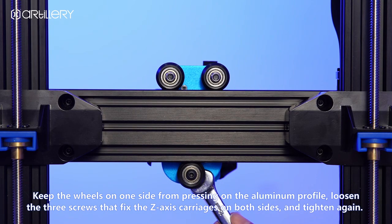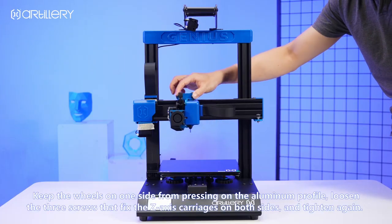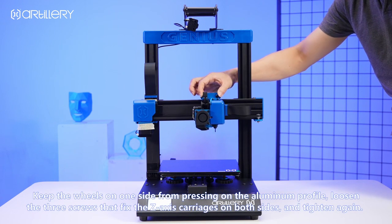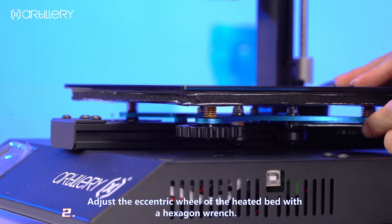Keep the wheels on a side from pressing on the aluminum profile. Loosen the twin screws that fix the V-axis carriages on both sides and tighten again. Repeat the same operation on the other side.